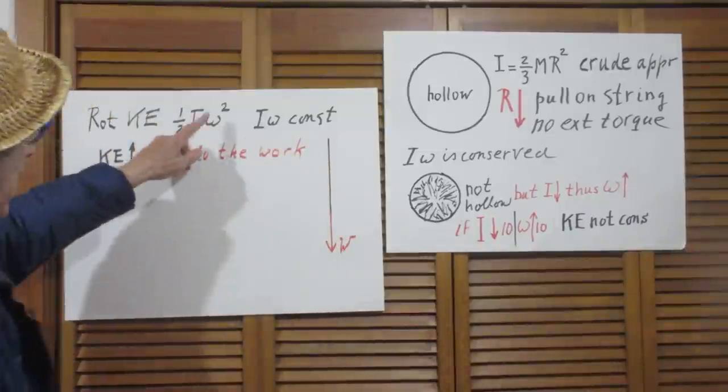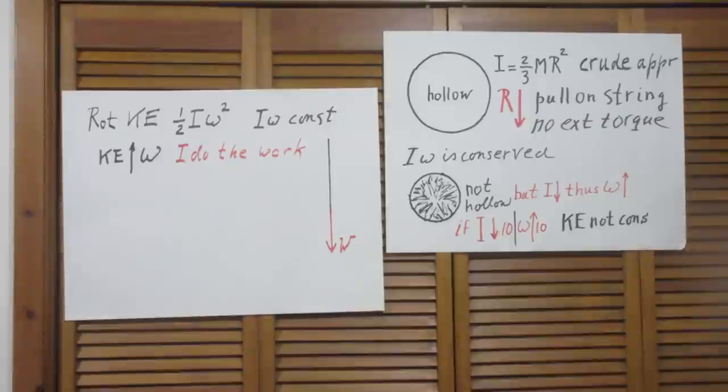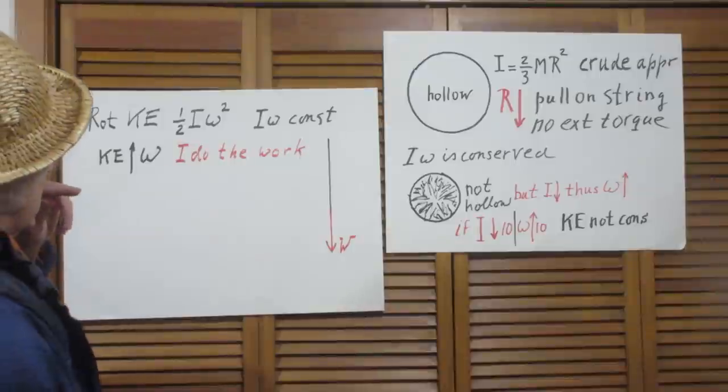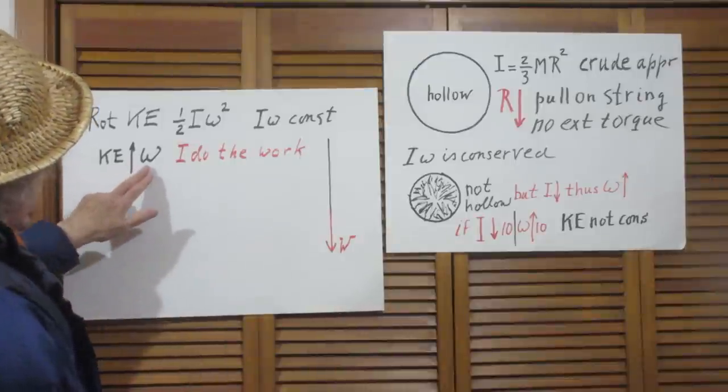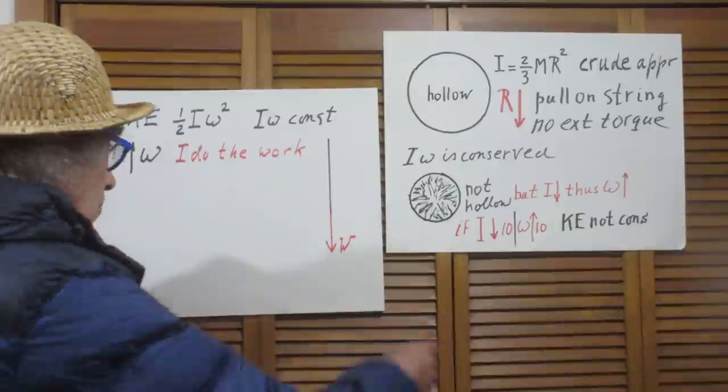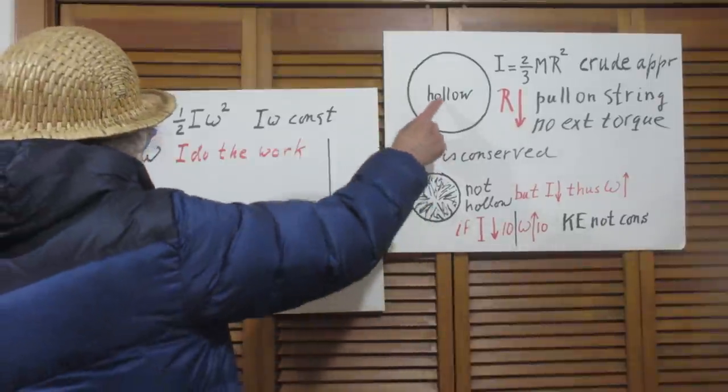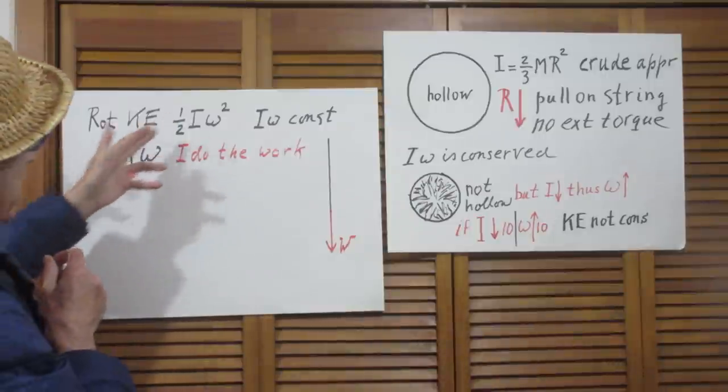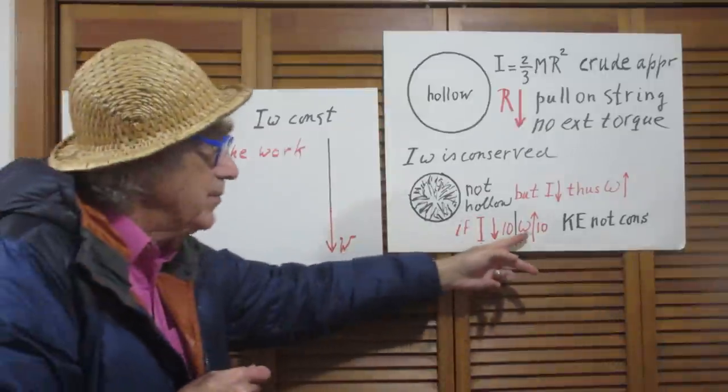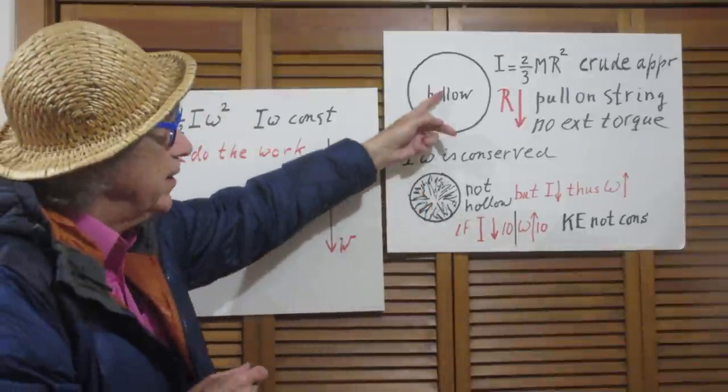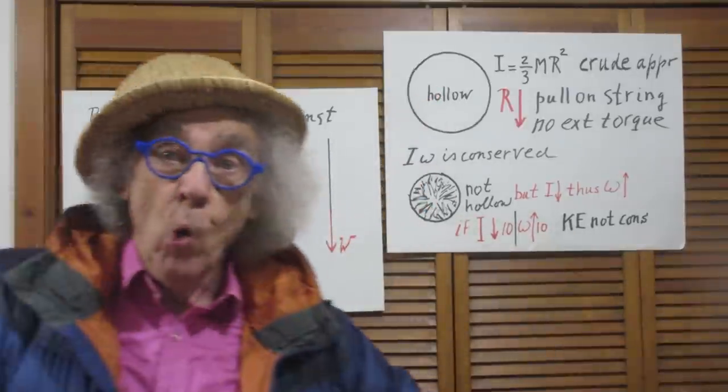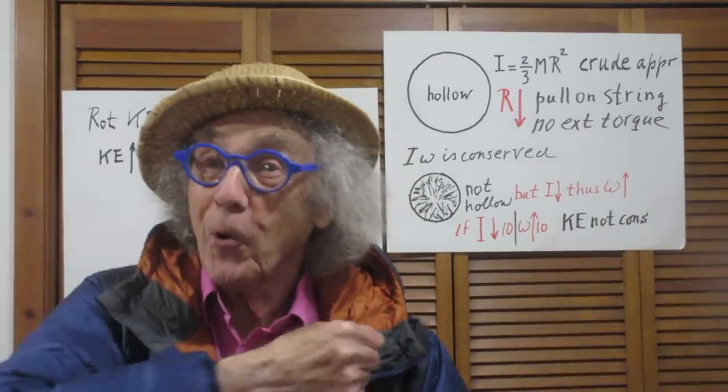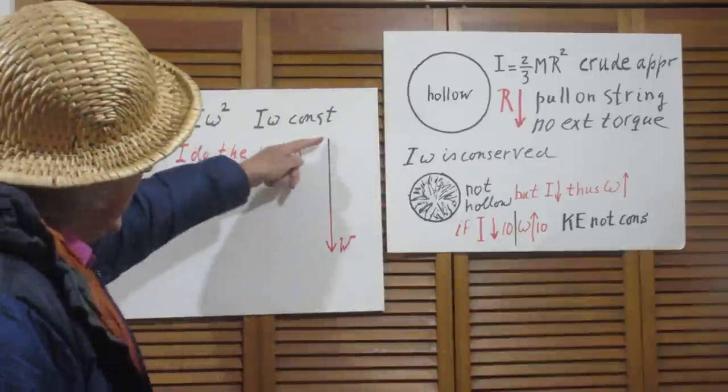Rotational kinetic energy is one-half I omega squared. Since I omega is constant in the two cases, the kinetic energy goes up by a factor omega when I'm here compared to there. And so the kinetic energy will then be about 10 times higher in this situation than in that situation. Who deserves the credit for that? You got it, Walter Lewin did the work. Here is the string, here is Walter Lewin, I pull down. That's not a torque, I do the work.